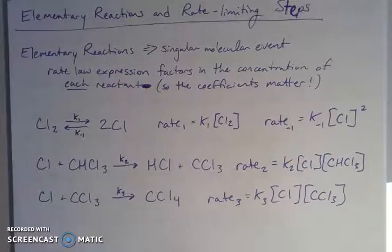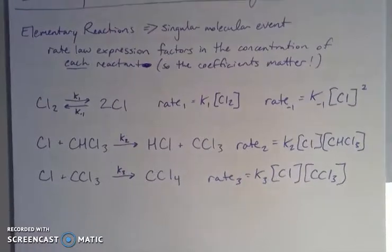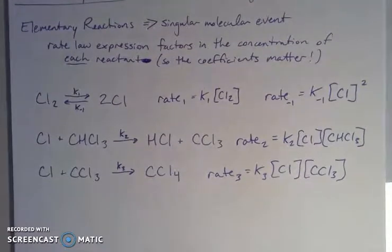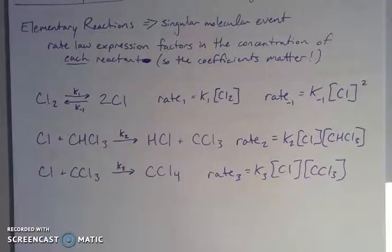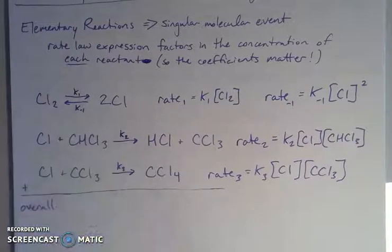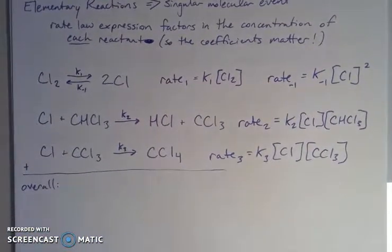If you remember Hess's law, it says we can add together individual reactions in order to figure out information about an overall process. When we think about this in terms of kinetics, the rates of the individual steps are going to impact the rate of the overall process. So I could write an overall reaction by adding these together — when adding chemical reactions, you add everything on the reactant side and everything on the product side.